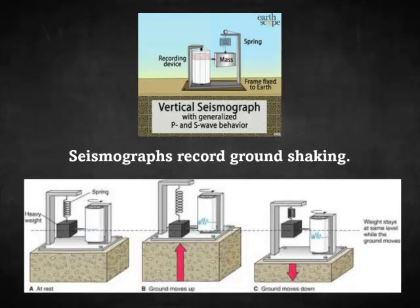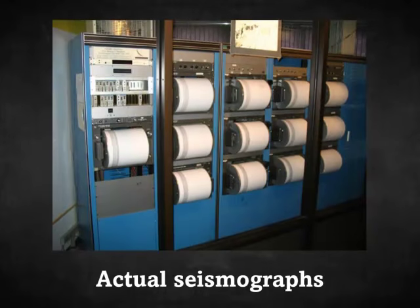A seismograph is the machine that graphs or draws the earthquake waves — where the pen makes a zigzagging line, and the bigger the zigzag, the bigger the earthquake. What actually happens is the ground shakes and the pen stays still; you're seeing the paper move under the pen. Imagine holding a pen while someone shakes your desk — your paper would go back and forth, drawing a zigzag line. There are about 12 or 13 seismographs here on a continuous spool of paper that goes around, and each time it gets back to the start, the pen moves slightly to the right to continue drawing.